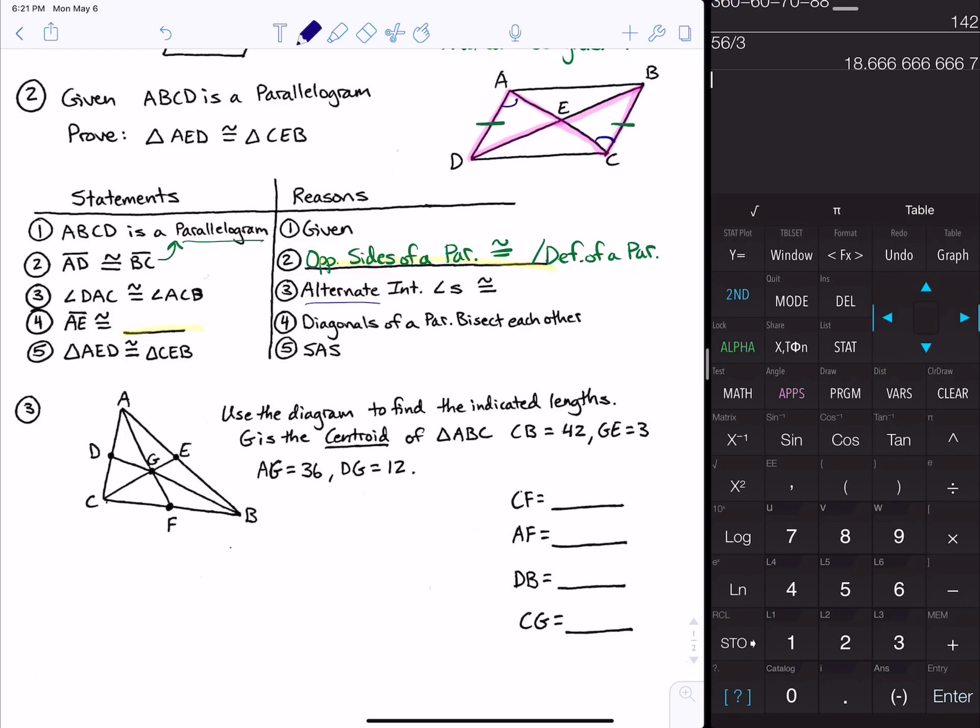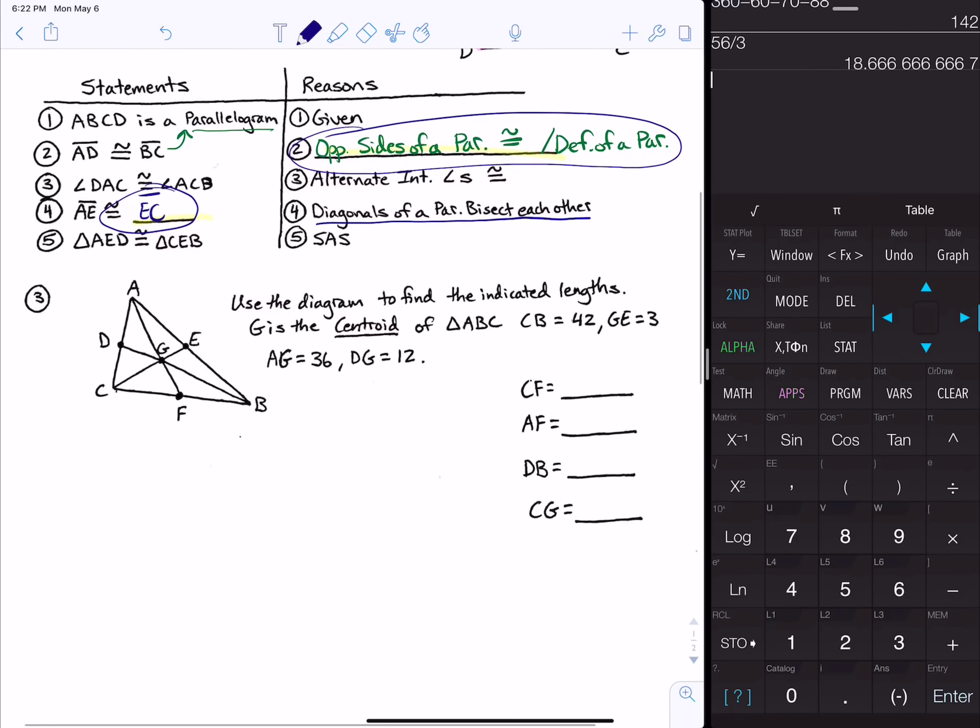The reason is those are alternate interior angles and those are congruent. Statement number four says AE would be congruent to, and we want to fill in the blank. The reason says diagonals of a parallelogram bisect each other, so AE would be congruent to EC. Then the triangles are congruent because of side-angle-side. You will not be responsible for writing the whole proof.